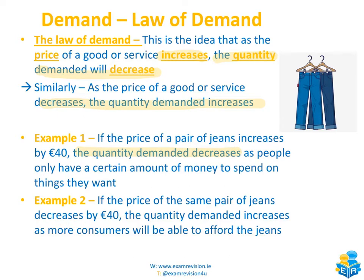The second example is that if those jeans had decreased by €40, then the quantity demanded will increase, because more consumers will be able to afford them. For example, if you walked into a shop with €50 to spend on jeans and saw that those jeans were actually only €10, you might even buy more than one pair. Someone who walked in with €20 or €30 who couldn't afford the original price can now afford those jeans too. That means the quantity of those jeans demanded by consumers has increased, because more consumers are able to afford them.